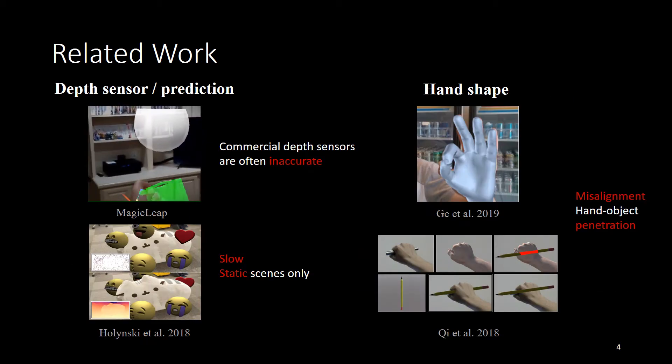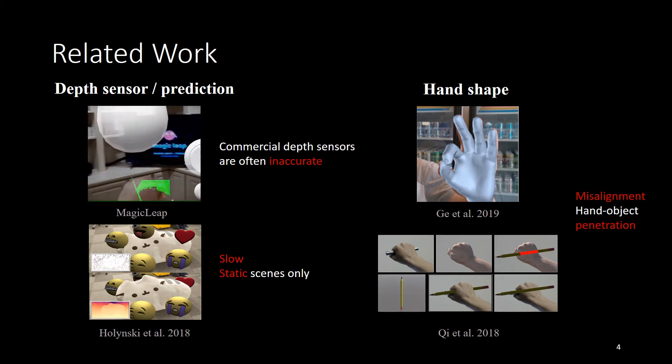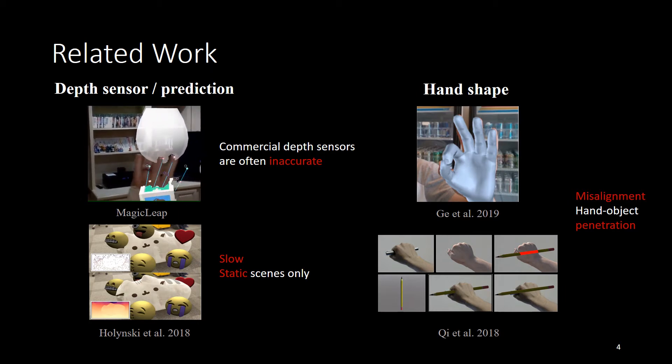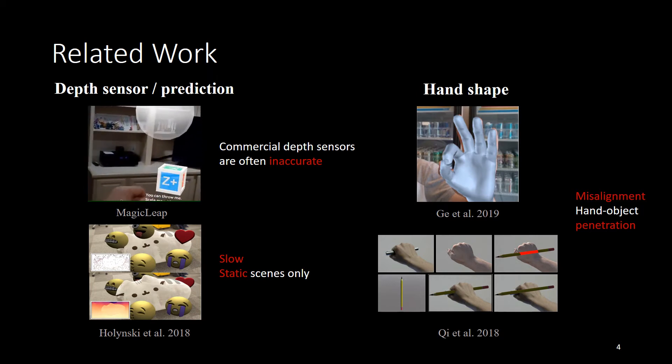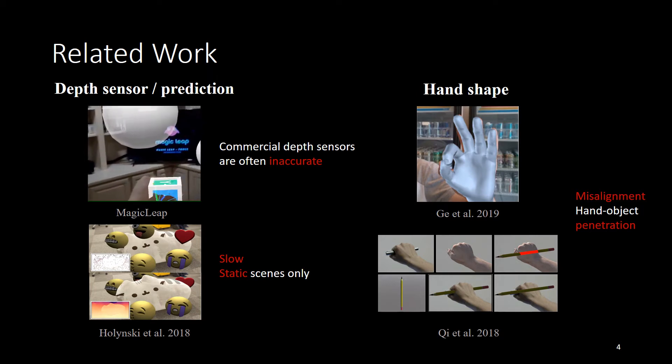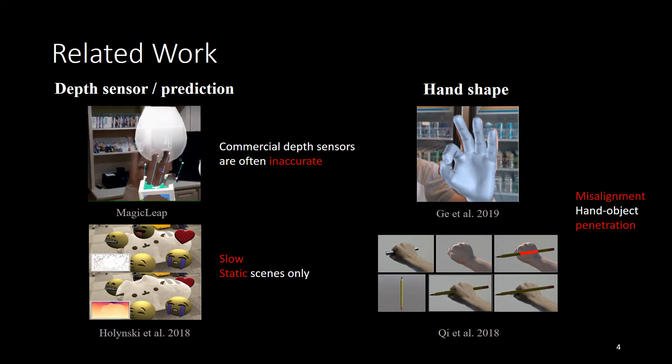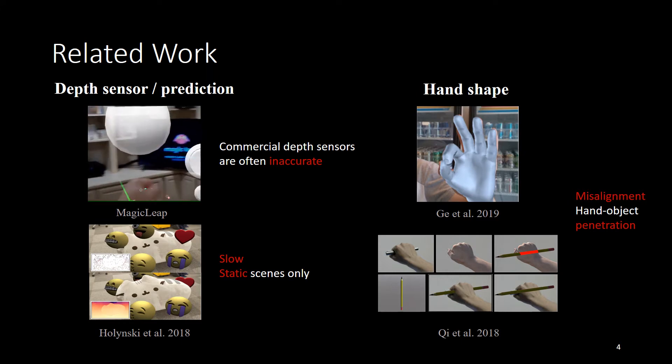Here are some possible solutions. The first solution is using depth sensors, but commercial depth sensors are often inaccurate, which will lead to noisy edges. Occlusion aware depth prediction and densification can be accurate, but only supports static scenes and speed is slow. Hand shape estimation methods suffer from misalignment between the template hand model and the real hand. Besides, all these methods cannot solve the hand object penetration problem by their own.